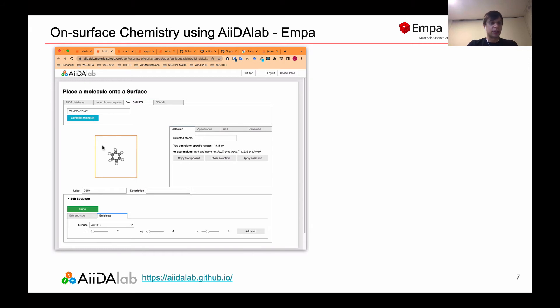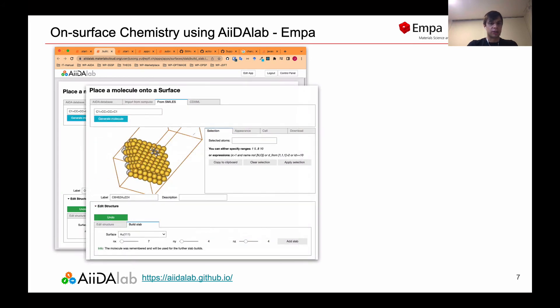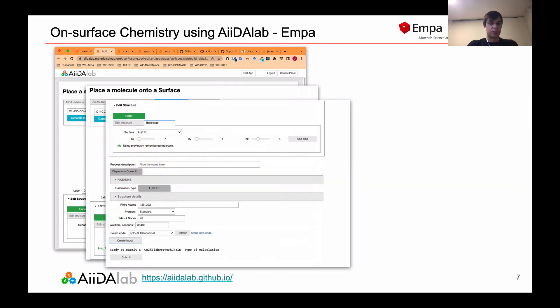So that's how it looks like. Here we put GOLD 111 under Benzene molecule. Then, once we are happy with the molecule, we can select a few parameters to run the simulation and then we submit it.